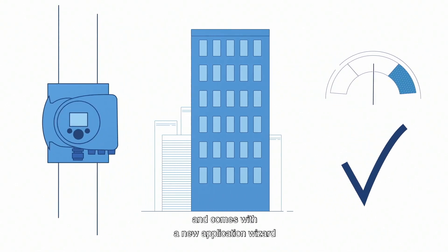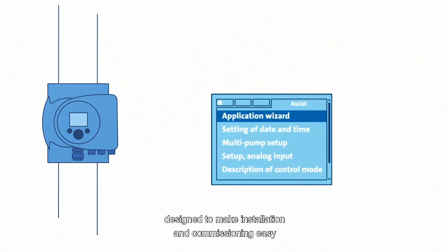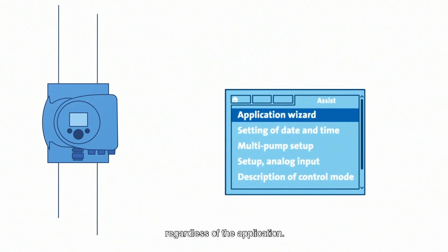The all-purpose Magna 3 is suitable for all HVAC applications and comes with a new application wizard, designed to make installation and commissioning easy, regardless of the application.